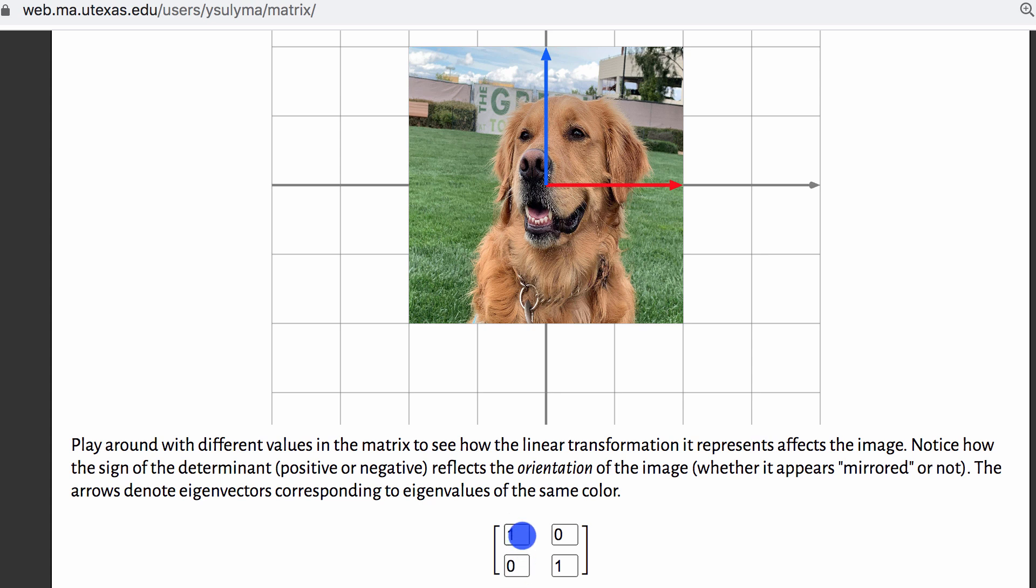And you can see that as this first column right over here in this identity matrix. And this blue vector right over here, this is the vector zero, one, which is the second column in this identity matrix. It goes zero in the X direction, and then one in the Y direction.